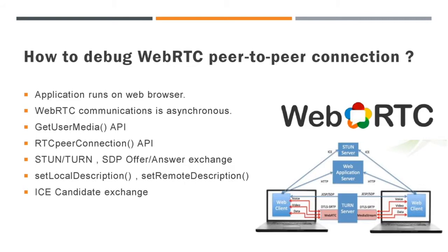You already know that WebRTC will get the video and audio stream by using the GetUserMedia API. Then an RTC peer connection object will be created by WebRTC to initiate the connection. After that, WebRTC will send and receive the SDP offer and answer with the help of STUN and TURN servers. During this process, it will set the local and remote description of the user. The ICE candidate exchange will happen along with the communication.